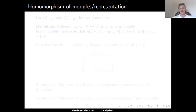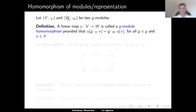We have seen a couple of examples of representations. Let's talk about maps between representations — these are homomorphisms of modules or representations. Assume we have two g-modules: vector space v with action map ·_v and vector space w with action map ·_w. A linear map η from v to w is called a g-module homomorphism provided that it intertwines the action of g on v and w, meaning that η(g ·_v v) = g ·_w η(v) for any g in g and v in v.